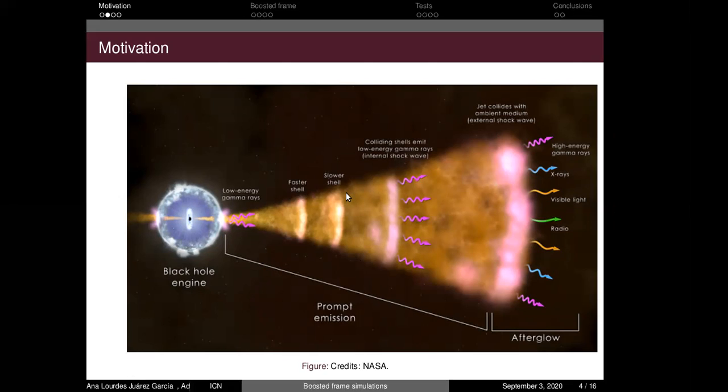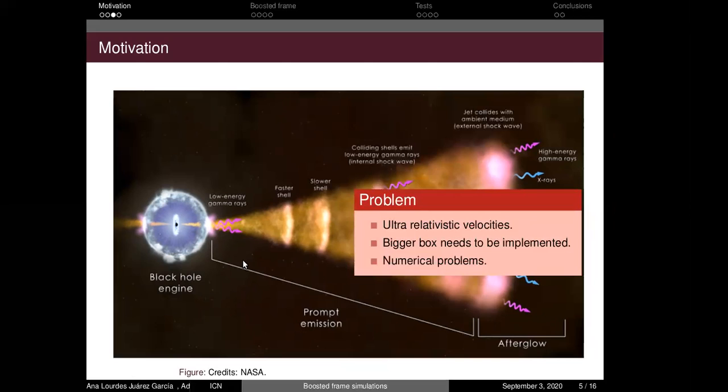So there are analytical models in one direction that solve the internal shocks, but they suppose that the shells are perfectly homogeneous and have a rectangular shape. But as we can see in the image, the shells don't have a specific structure. Also, there are a few papers of numerical simulations that solve internal shocks, but they don't explain how they really solve them.